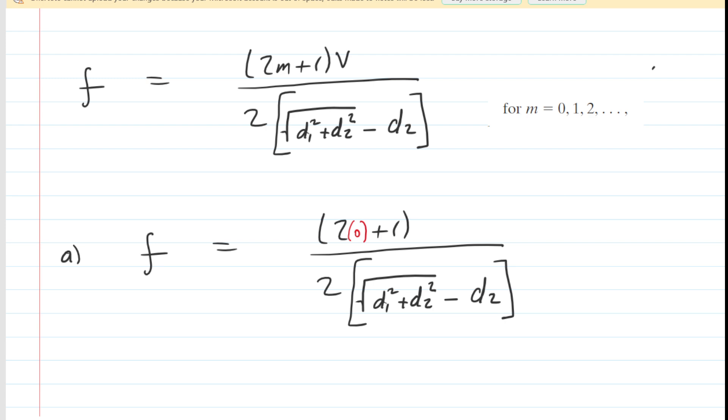Now, v would be the speed of sound, and that is taken to be approximately 343 meters per second. And then the values of d1 and d2 are given in the problem, so we can plug those in as well. So everything's plugged in. When we simplify this, we're going to get a frequency of 343 hertz. So that is the correct answer to part a.